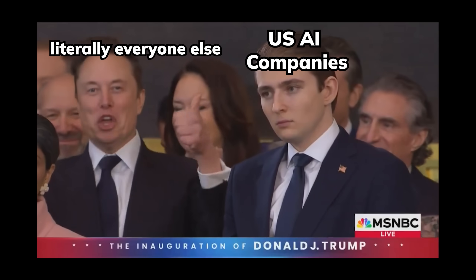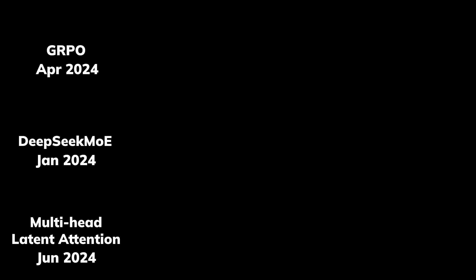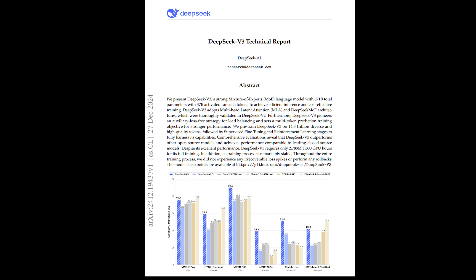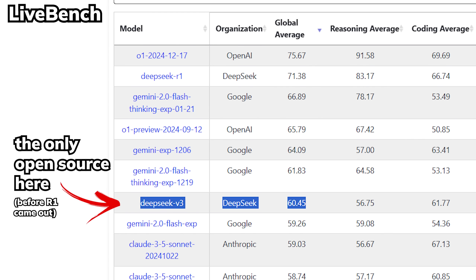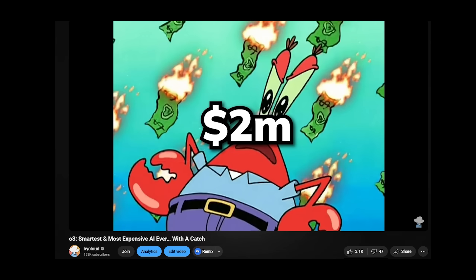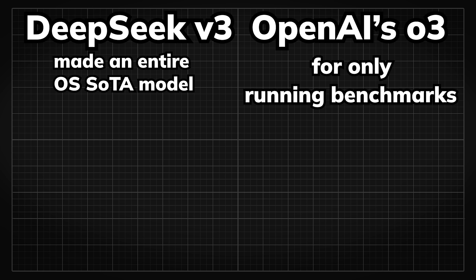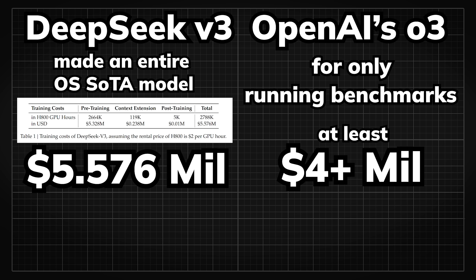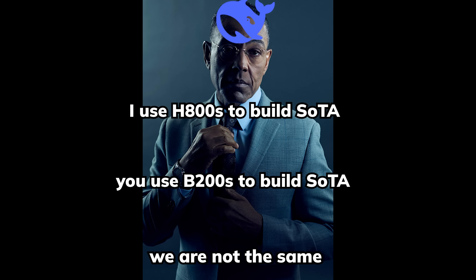How did they achieve this? Their focus on innovative techniques in older research — like DeepSeek V2's MLA, DeepSeek MoE, and DeepSeek Math's GRPO — paid off with the release of DeepSeek V3 one month ago, combining all three and hitting state-of-the-art in the non-reasoning category. DeepSeek spent the same amount that OpenAI spent on running benchmarks for O3 to build all of DeepSeek V3, with no fancy hardware and a tiny budget. Which is absolutely crazy.